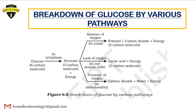Now comes the main part — the breakdown of glucose by various pathways. We have glucose, a six-carbon molecule. Glucose breaks down into two molecules of three-carbon compound, which is pyruvate. This process occurs in the cytoplasm and its name is glycolysis.